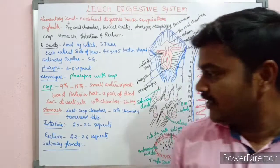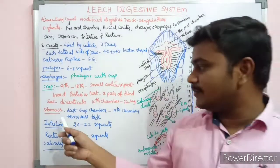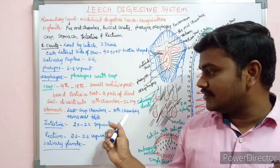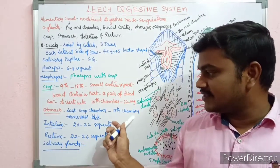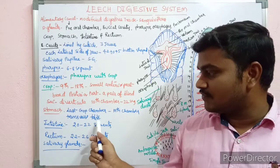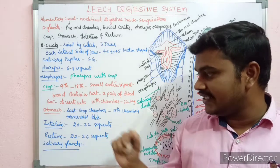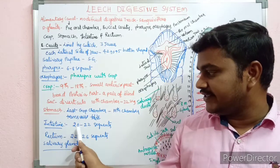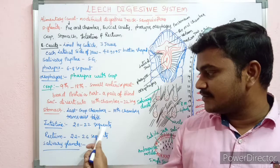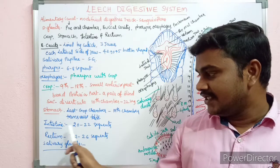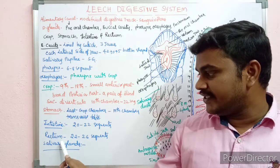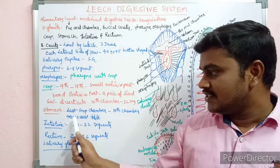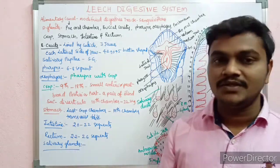The stomach is the last crop chamber, located in the 19th segment, with transverse folds. The stomach opens into the intestine in segments 22 to 22, and the intestine opens into the rectum in segments 22 to 26.